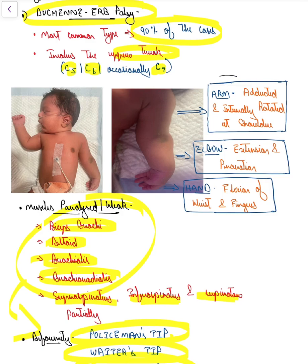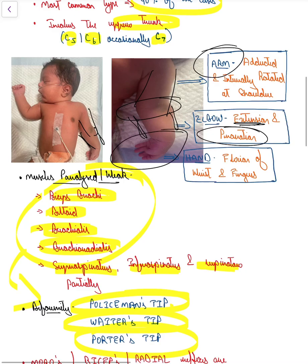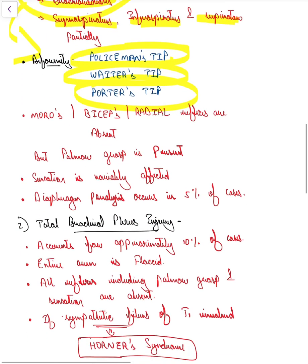What is the deformity? As we can see in this image, the arm and shoulder are adducted and internally rotated. The elbow and forearm are extended with pronation. Finally, the wrist is flexed with fingers being flexed. This is the deformity which we expect.